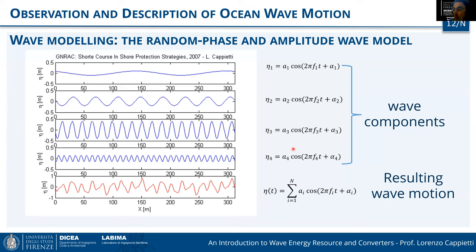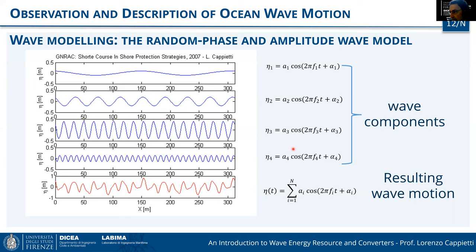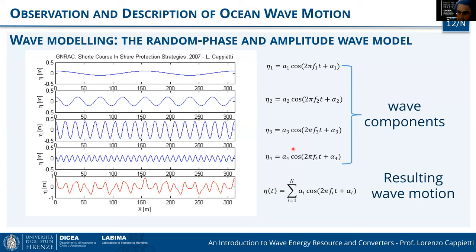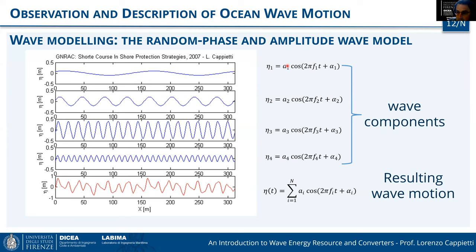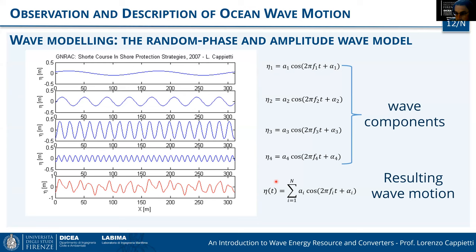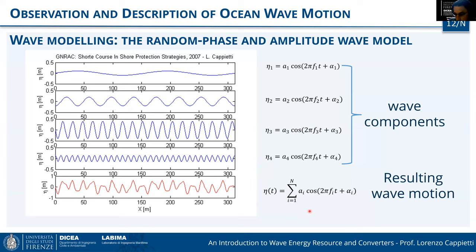Each wave component has a different amplitude, frequency, and phase. The resulting wave motion can be obtained by summing all components — provided we know the amplitude, frequency, and phase of each. The dispersion relationship — one of the most important relations between wave characteristic parameters — tells us that given the water depth and the wave period, the wavelength can be obtained. So the wave period and wavelength are linked; we can use either one.